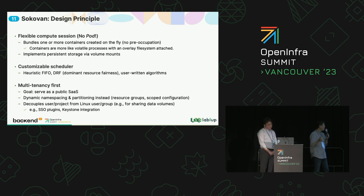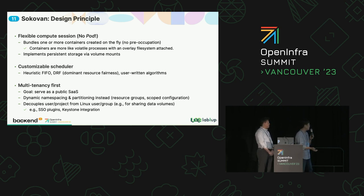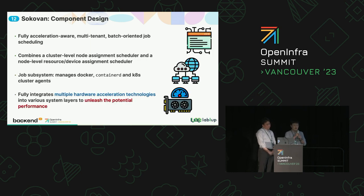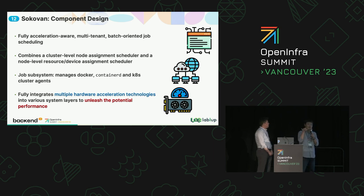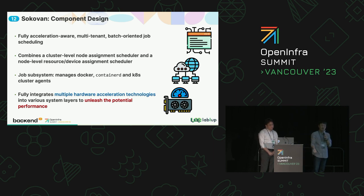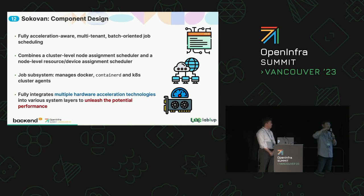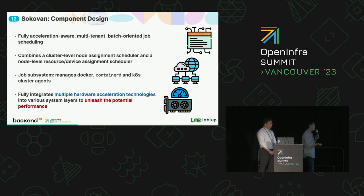We also focused heavily on multi-tenancy because we manage a lot of GPUs. We focus on a fully acceleration-aware system and combine a two-level scheduler: the whole cluster-level scheduler and an intra-node scheduler as well. We made a job agent-server system to manage container management software such as Docker, containerd, and Kubernetes itself. Finally, we made very straightforward integration for many hardware types including GPUs, MPUs, and many accelerated network systems.